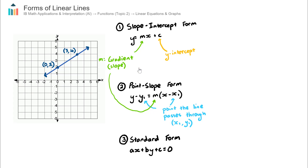The three forms are slope-intercept form, point-slope form, and standard form. Usually I will start a question with either Form 1 (slope-intercept form) or Form 2 (point-slope form), depending on the information in the question. I very rarely start with standard form, but IB exam questions will often ask to leave your final answer in standard form. So I usually start with Form 1 or Form 2, then rearrange my equation back into standard form at the end.